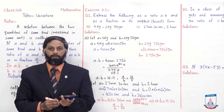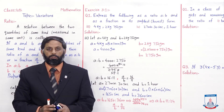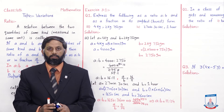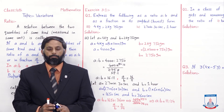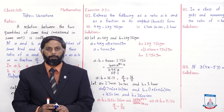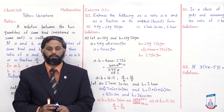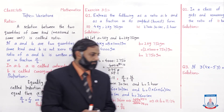تو یہ students method ہے۔ کوئی بھی دو quantities given ہوں ان کو ratio اور fraction کی form میں لکھنے کا۔ یہ parts میں نے وہ solve کروائے ہیں جن میں units same نہیں ہیں۔ جن میں units same ہیں ان میں آپ simply A اور B let کرکے A:B اور A/B کی form میں لکھ سکتے ہیں۔